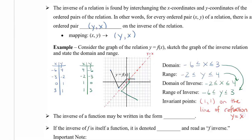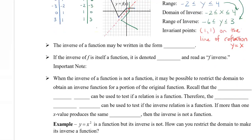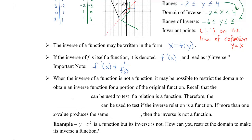The inverse of a function can be written in the form x = f(y), because x and y have swapped. Now, if the inverse is itself a function, we can use the special notation f⁻¹(x), read as 'f inverse of x.' It's really important to note that this is just a notation — the negative 1 does not mean we're writing this as a reciprocal; it does not mean 1 over f(x). If you did want to write the reciprocal, that would be written as [f(x)]⁻¹.